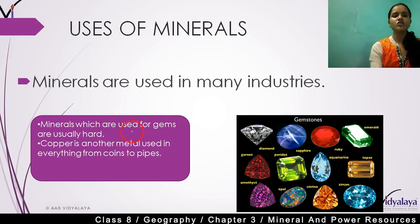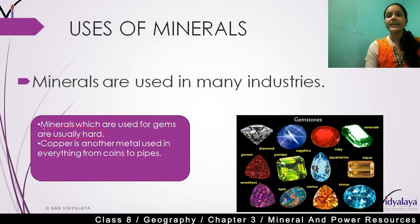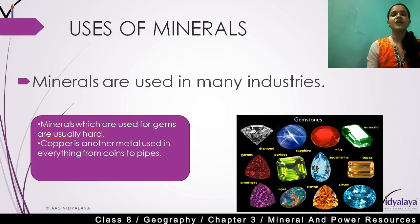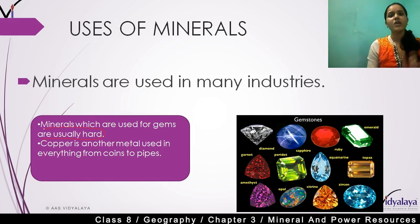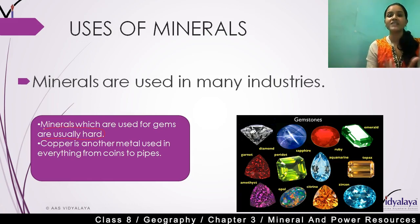Minerals used for gems are usually hard. Gold, diamond, and platinum are examples — from these we can make gemstones and jewelry. These precious stones are used to make jewelry, which is one of the main uses of minerals.